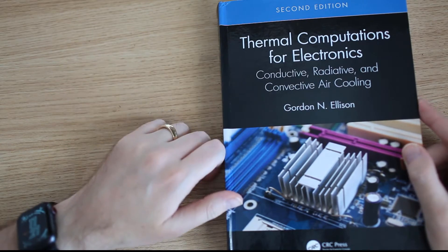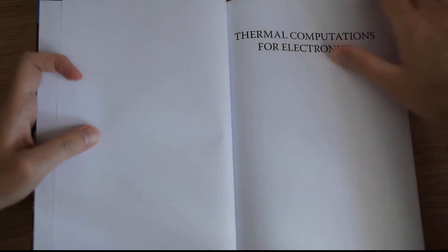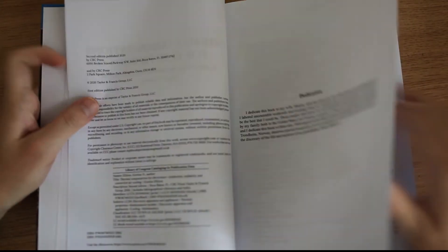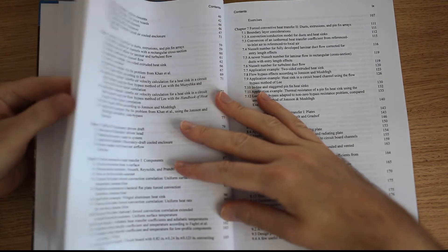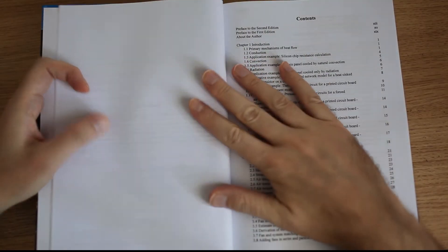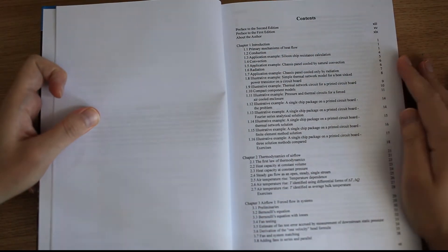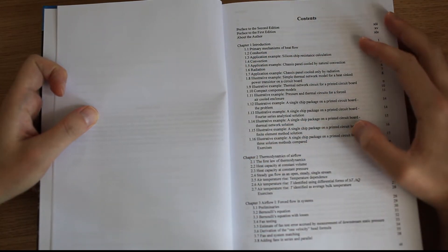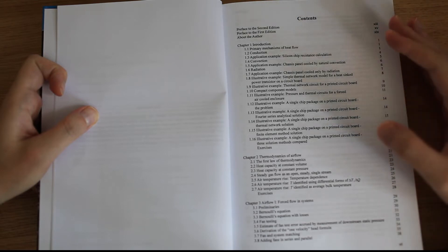Conductive, Radiative and Convective Air Cooling. Let's have a look at what's inside this book. Let's have a look first at the table of contents, which is always very important to have a look.